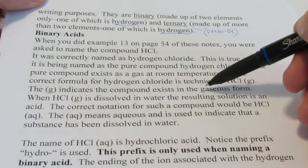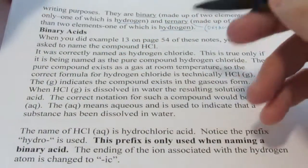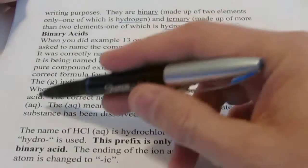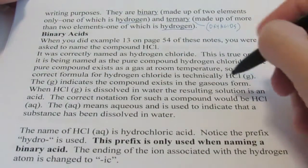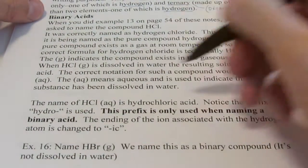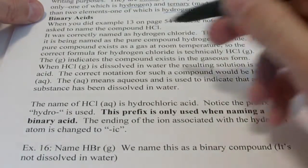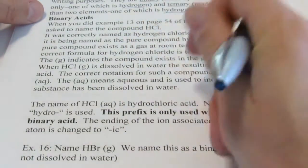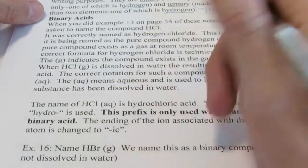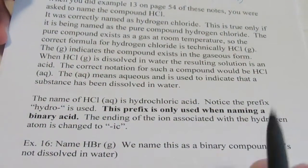The G indicates the compound exists in the gaseous form. Now, when I take HCl and bubble it through water and dissolve it in water, the resulting compound is now an acid. The correct notation would be HCl(aq). The Aq means aqueous and is used to indicate that a substance has been dissolved in water. We're going to use that designation quite a bit for the rest of the year.